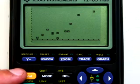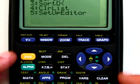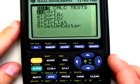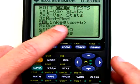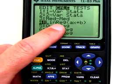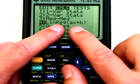So, under stat here, if I just hit that, I want to calculate. And I'm going to go down to item number four, which is linreg, which is short for linear regression, and that is the technical name for line of best fit.